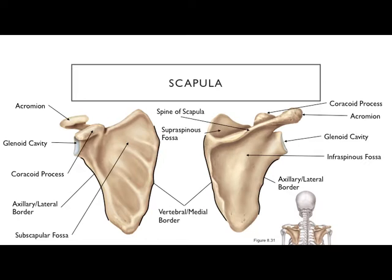That makes the opposite edge the medial or vertebral border, since the vertebral column runs up and down along that side. On the anterior side of the scapula there's a large depression called the subscapular fossa — it takes up the entire inner wall of the scapula. Above and below the spine we also have the supraspinous and infraspinous fossae — depressions above or below the spine.